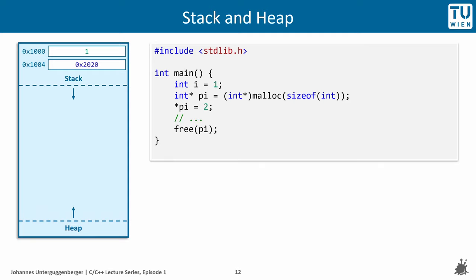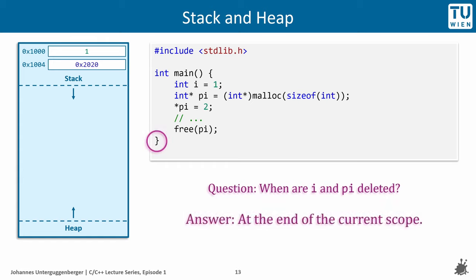So free has freed the memory from the heap. But when do actually i and pi get deleted? The answer is at the end of the current scope, which is at the end of the current block. So at the final closing brace, all data that has been put onto the stack within the main function is getting removed from it.